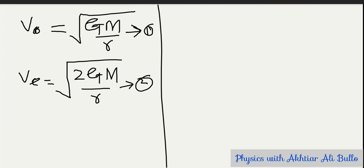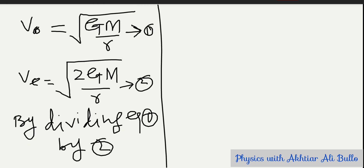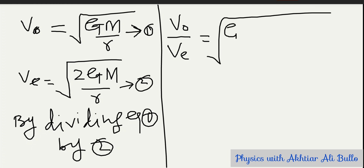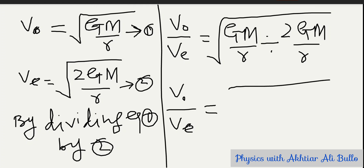We have to find the ratio of orbital velocity to escape velocity. By dividing equation number 1 by equation number 2, the ratio of orbital velocity to escape velocity will be equal to √(GM/r) divided by √(2GM/r).